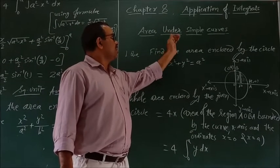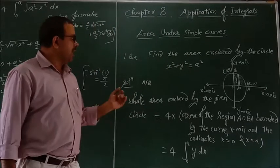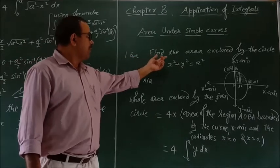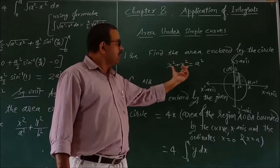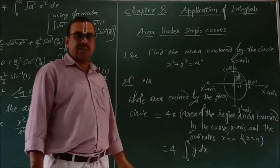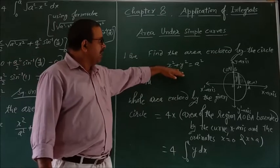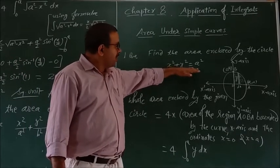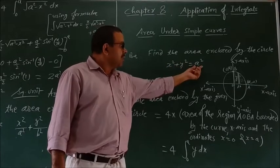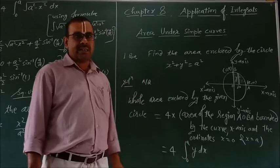So the area of simple curves involves a lot of examples. First example: find the area enclosed by the circle x² + y² = a². These are the properties — this is the standard equation, which gives us the center and the left-axis. This is the standard equation for a circle with center at origin.